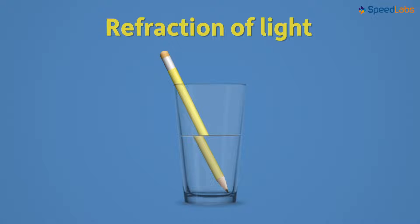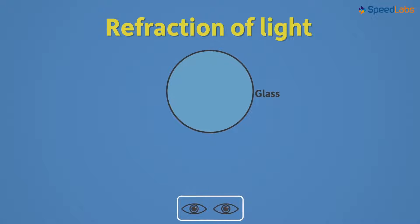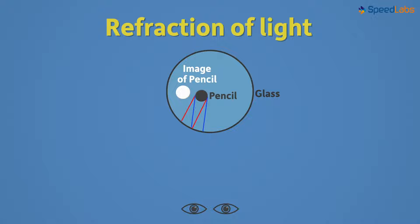To understand this better, let us look at the situation from the top view. The person observing the glass is looking at the side view and is at this point. This is the pencil and this is its image. The light from the pencil is incident here and then refracted like this. If we draw a dotted line backwards, it leads us to this image.